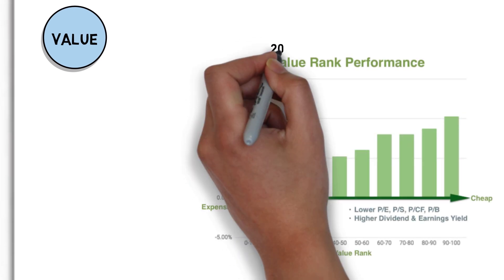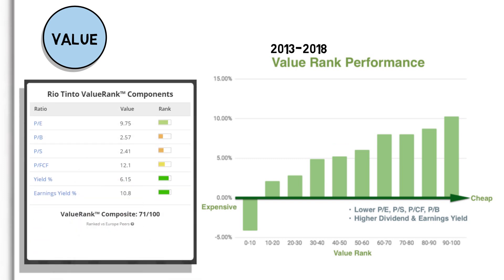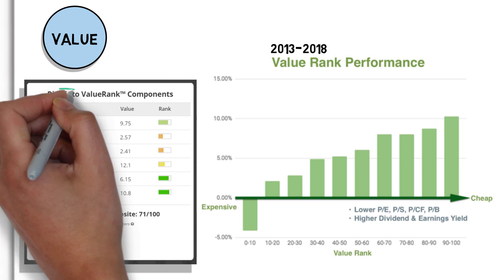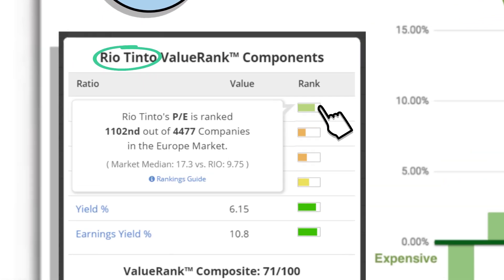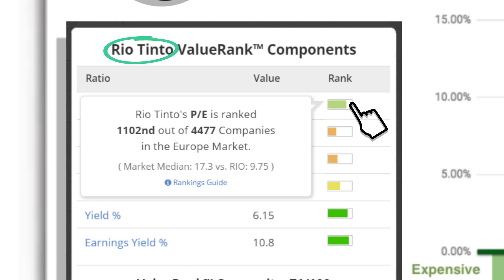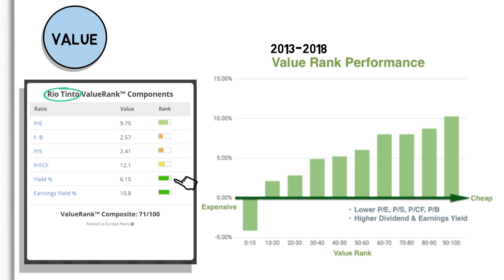Next, we have the value factor and its performance over the same six-year period. The commonly used value components accepted by the investing community are shown here, presented by Stockopedia for the company Rio Tinto. We have the price to earnings, price to book, price to sales, and the price to free cash flow ratios. If we look at one of these ratios, we can see the company is given a rank from the universe of companies being measured. We also have the dividend yield and earnings yield rankings. These value factor rankings are then translated into a total value score. In this example, Rio Tinto has a combined score of 71.